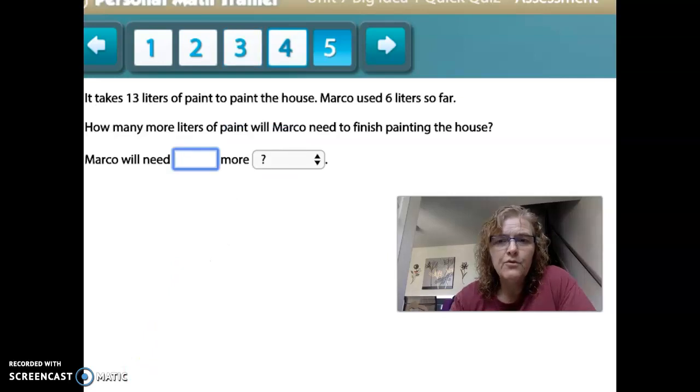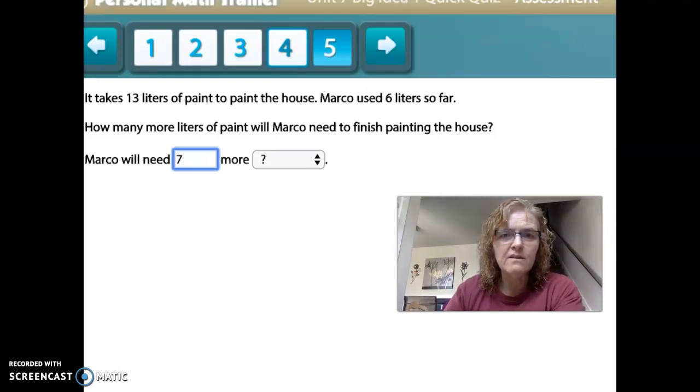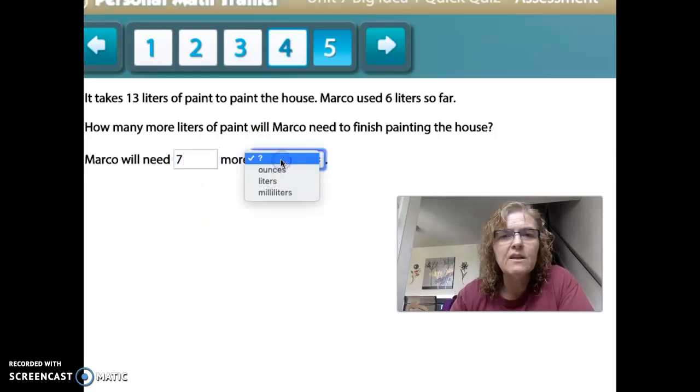Number four, if it takes 13 liters of paint to paint the house, Marco used 6 liters so far. How many more liters of paint will Marco need to finish painting the house? Marco will need, I need to do 13 minus 6 because I've used that many. So 6 plus 7 is 13. So he needs 7 more liters. Liters is the unit of measure we're using.